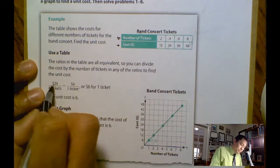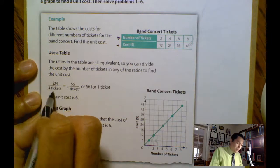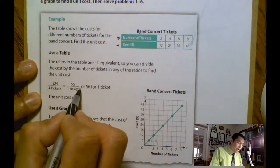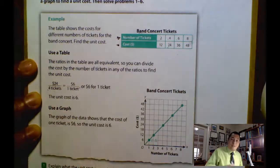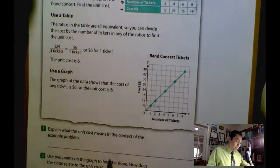So in this case, for example, I just made the division. You have an example. So 24 divided by 4 equals 6 over 1 or just $6 for one ticket. So that's the relationship that we're looking for.